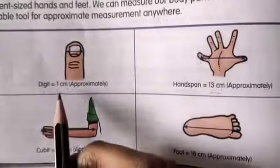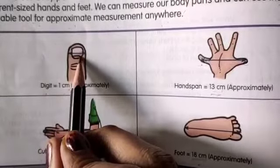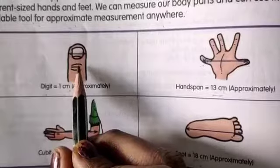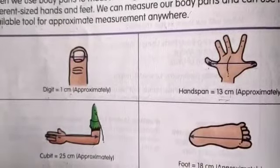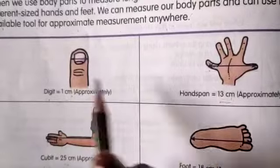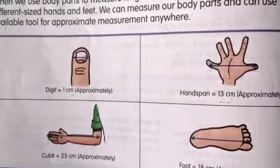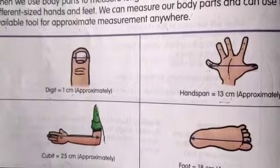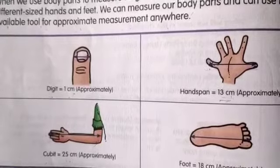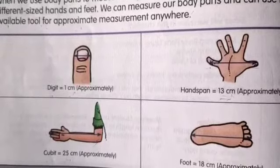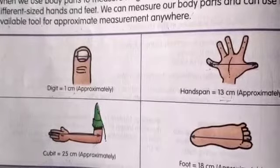Every person will have their individual measurements. Here it will be 1 centimeter, but it can be 1.5 or 2 centimeters also. According to the individual, measurements will change. For small measurements, you can use a ruler, a long scale, or a tape to measure.